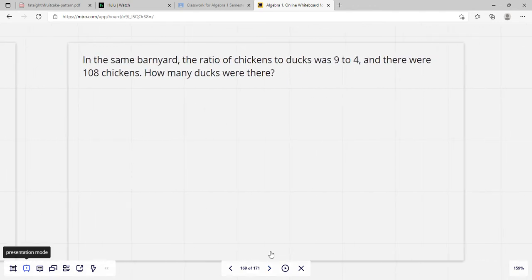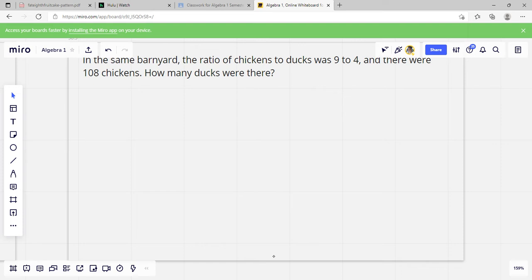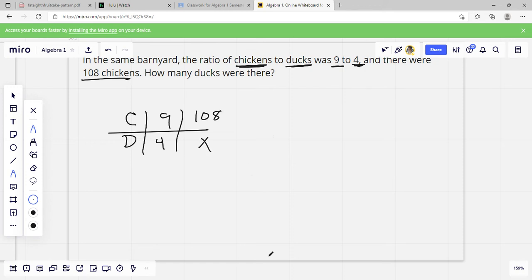In the same barnyard, the ratio of chickens to ducks was 9 to 4. If there were 108 chickens, how many ducks were there? So we've got chickens to ducks. I'm going to draw our little tic-tac-toe board here. So the ratio of chickens, chickens is our first word. So 9 is going to be related to chickens. Ducks is going to be 4. There were 108 chickens. So where my chickens is, I'm going to write 108. And then my blank spot is going to be my X. So I've got 9 to 4 equals 108 to X.